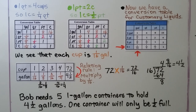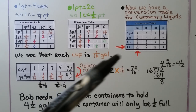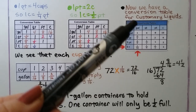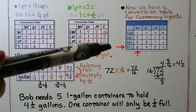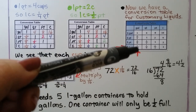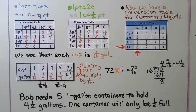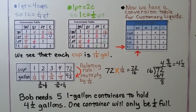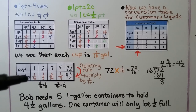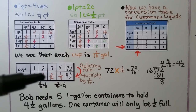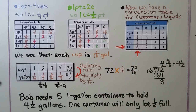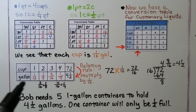I have a copy of this conversion table in the photo section on my Facebook page. We see that each cup is one-sixteenth of a gallon. We go to one cup, see it's one-sixteenth, and look up for gallon. We can make a table of values showing the sequences for cups and gallons and find the relating rule: one cup is one-sixteenth of a gallon.